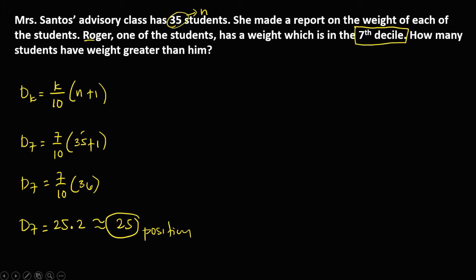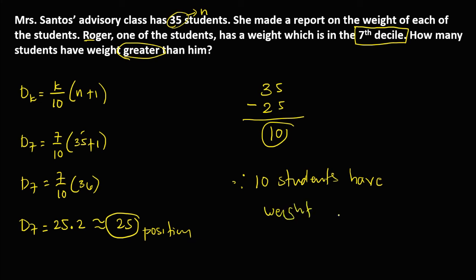d7 is 25.2 or approximate to 25. This is the position of Roger. Therefore, to find the number of students that have weight greater than Roger, from the total number of students, that's 35 minus the position of Roger, that's 25. So 35 minus 25, that's 10. Therefore, 10 students have weight greater than Roger.